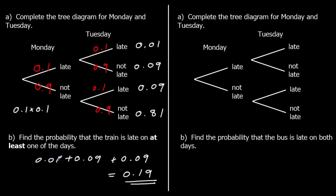We could have also done 1 minus 0.81 and we would have got the same answer.